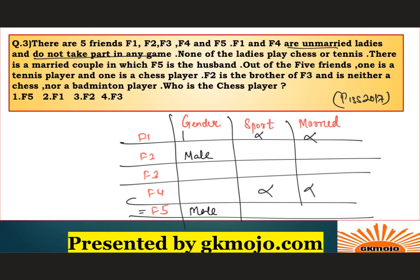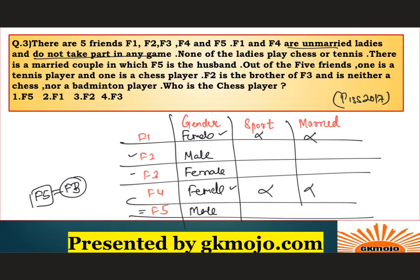F1 and F4 are unmarried, so F5 must be married to F3 — the only remaining person. F3 is therefore female and married. F2 is the brother of F3 and is neither chess nor badminton, so F2 must be the tennis player. Since none of the ladies play chess or tennis, F3 plays badminton. That leaves F5 as the chess player. The correct answer is F5, option 1.